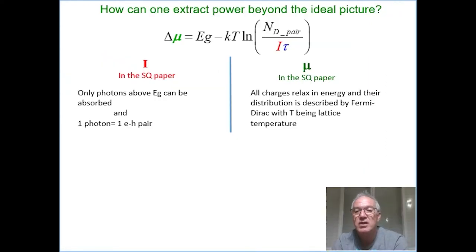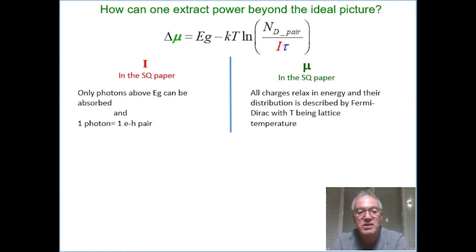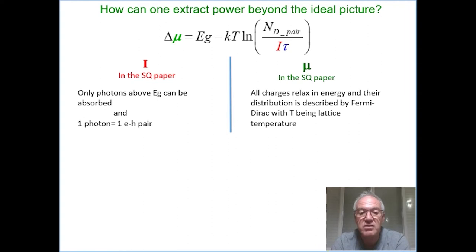So let's see what the extremely ideal case outlined in the Shockley-Queisser paper looks like and go through its assumptions. Let's first look on the bright side — we can gain and create solar cells that will have more efficiency than the ones described by the paper.